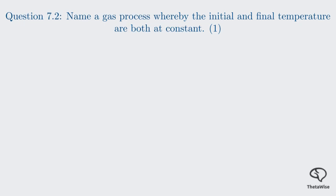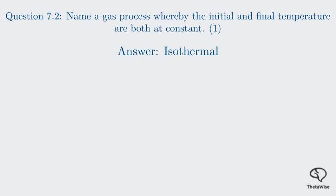We just learned about three fundamental gas processes: isochoric, isobaric, and isothermal. The question specifically mentions a process where the temperature is constant — meaning the temperature at the beginning is the same as at the end. Looking at our list, the process that keeps temperature constant is the isothermal process. Therefore, an isothermal process is the correct answer.